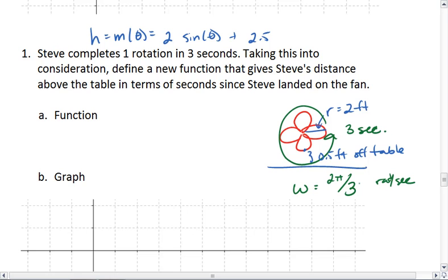The same idea applies here. If we know angular speed and we know how long Steve has been traveling, we can figure out what angle he swept out.